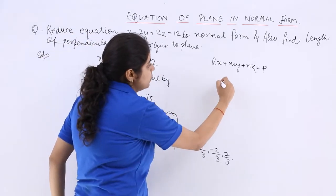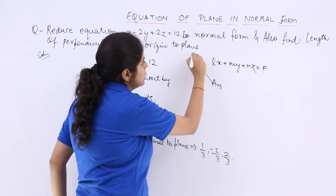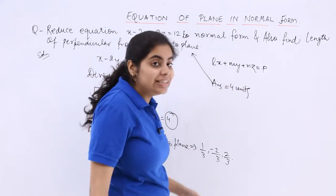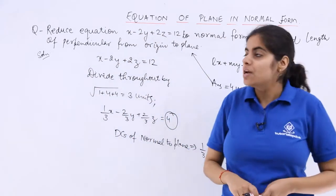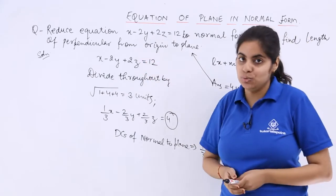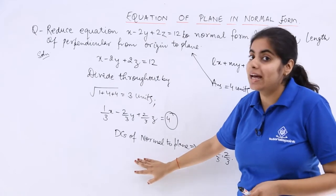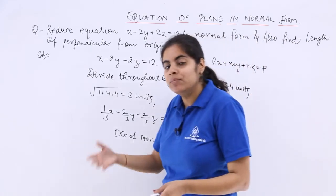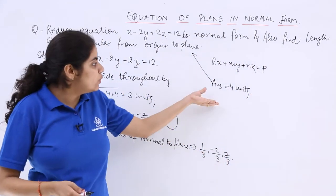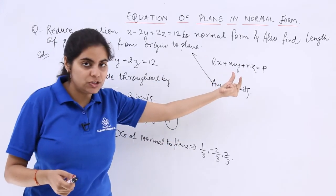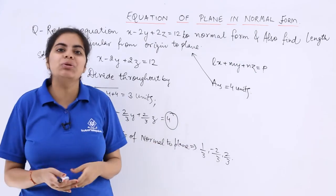So this P, which means the answer to the second part, is 4 units, because this is the length of the perpendicular from the origin to the plane. So first of all you have to make it in a form so that you get the direction cosines of the normal to the plane, and last but not least you have to obtain the second part answer too. So that would be the P of the general form of the equation, which is 4 units in this case.